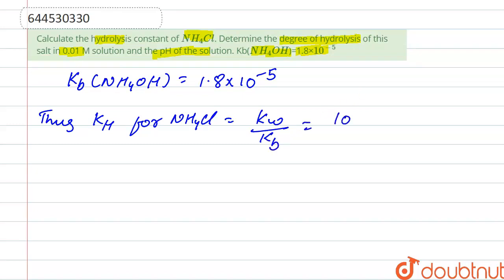Kw is universal constant, that is 10 to the power minus 14, and Kb is given, that is 1.8 into 10 to the power minus 5. So after solving this, we get 0.55 into 10 to the power minus 9.